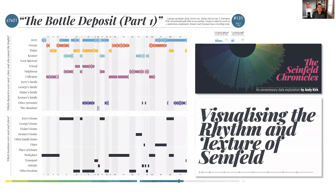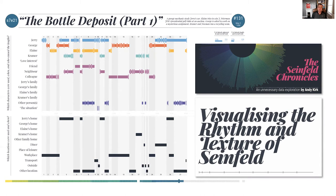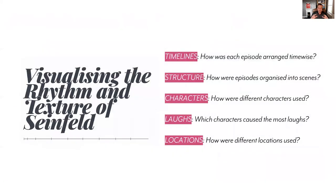A project I recently worked on was to visualise Seinfeld, the US sitcom from the 90s. This is a huge project and my curiosity was to investigate visualising the rhythm and texture of every episode. The idea was to almost deconstruct the shows into something like a musical composition — when were the characters on screen, who got the laughs, which locations were used, and then statistically analyse who has the most appearances and who gets the most laughs. But the starting point was the curiosity, and that gave me a sense of what I would pursue, but crucially also what I would not pursue.